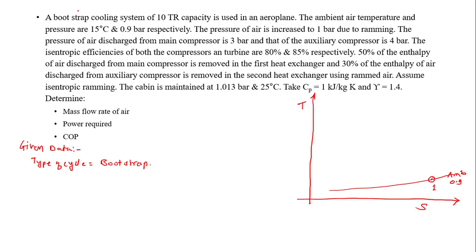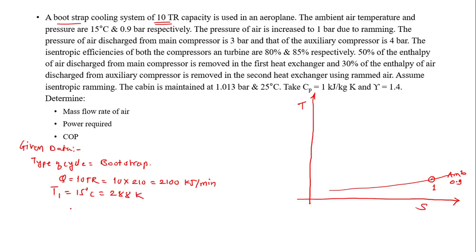The system has a cooling capacity of 10 TR, so Q equals 10 TR. Converting to kilojoules per minute, multiply by 210 to get 2100 kilojoules per minute. The ambient air temperature and pressure are given as 15 degrees and 0.9 bar, so temperature T1 is 15 degrees Celsius which is 288 Kelvin, and pressure P1 is 0.9 bar.